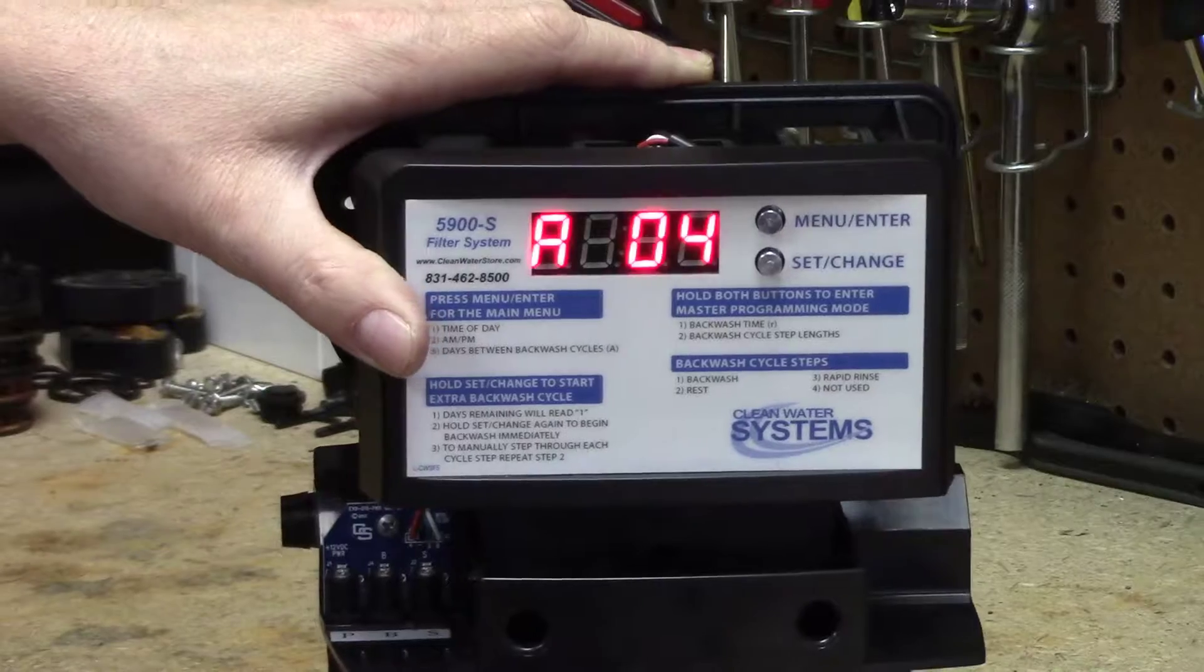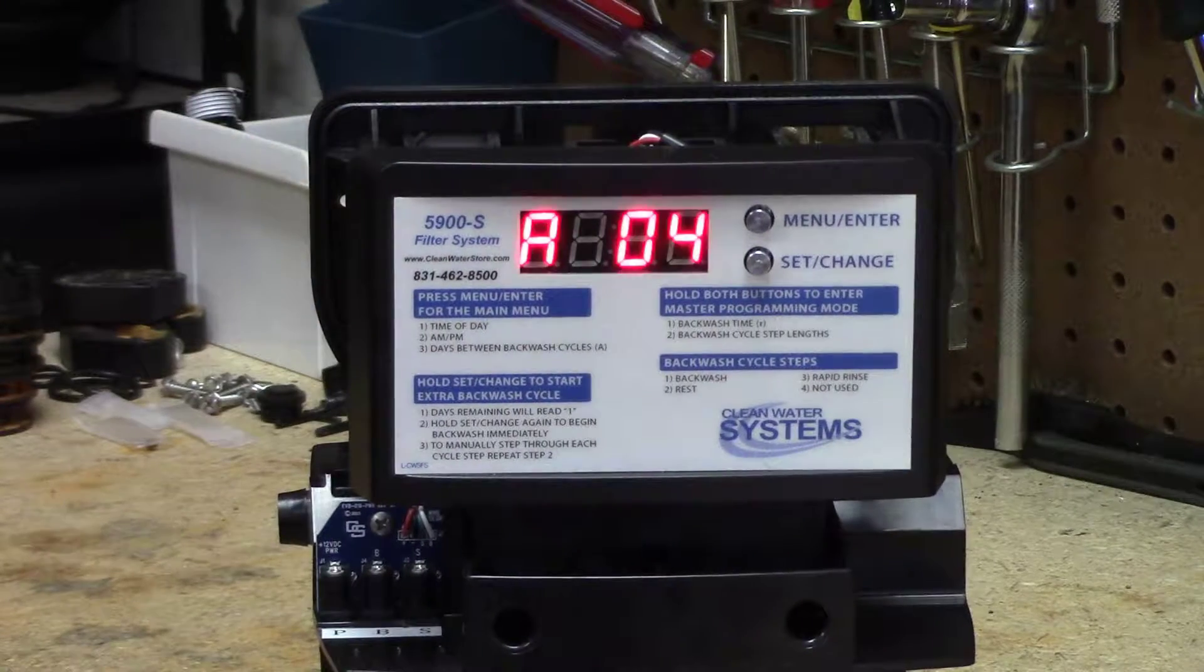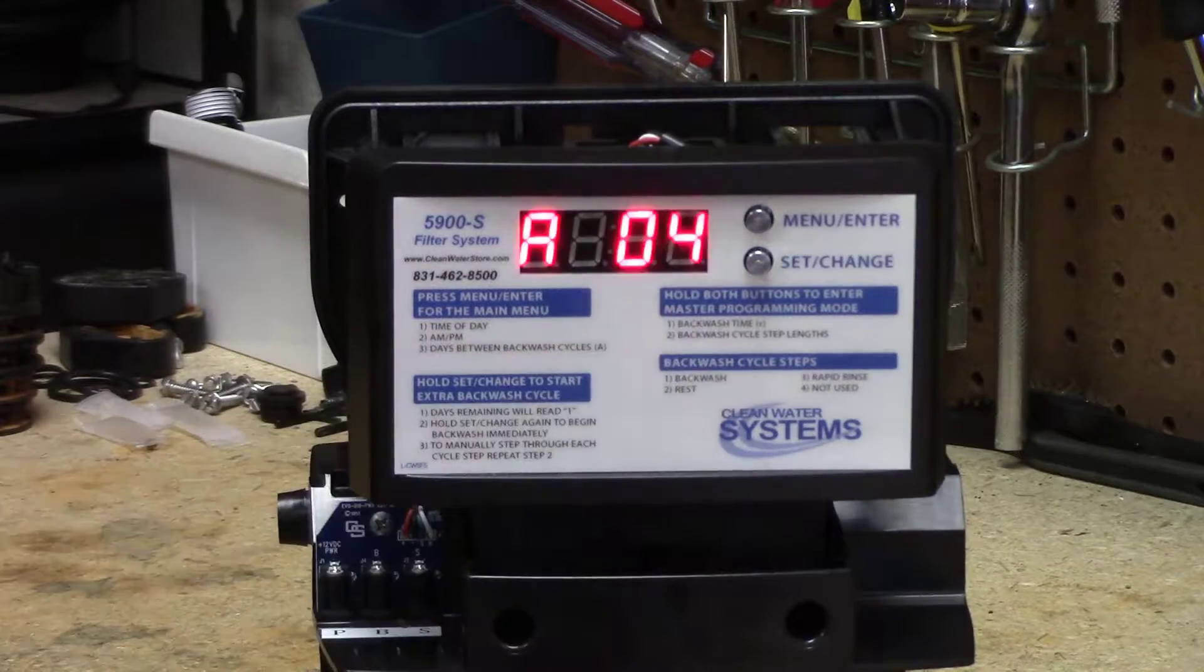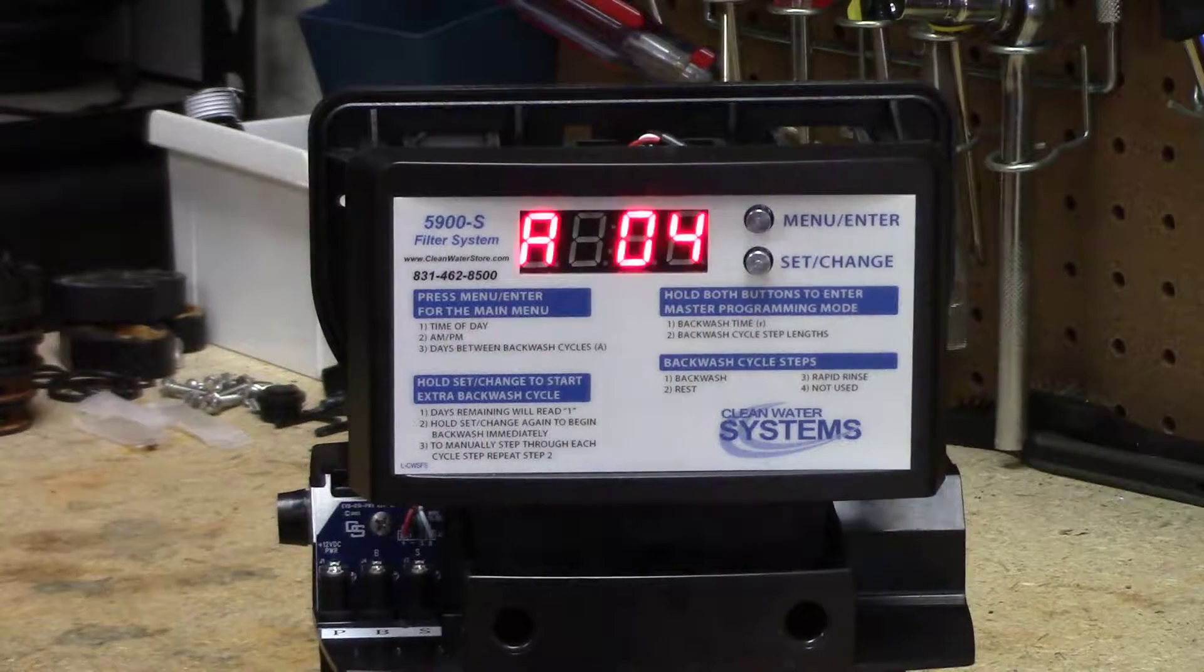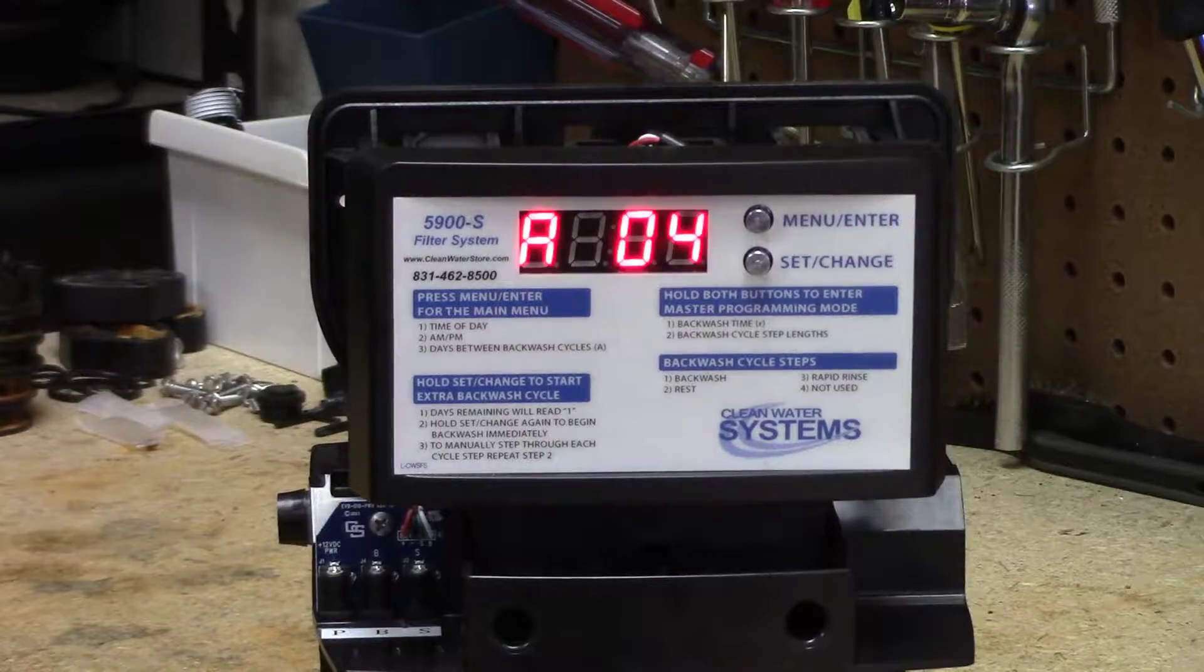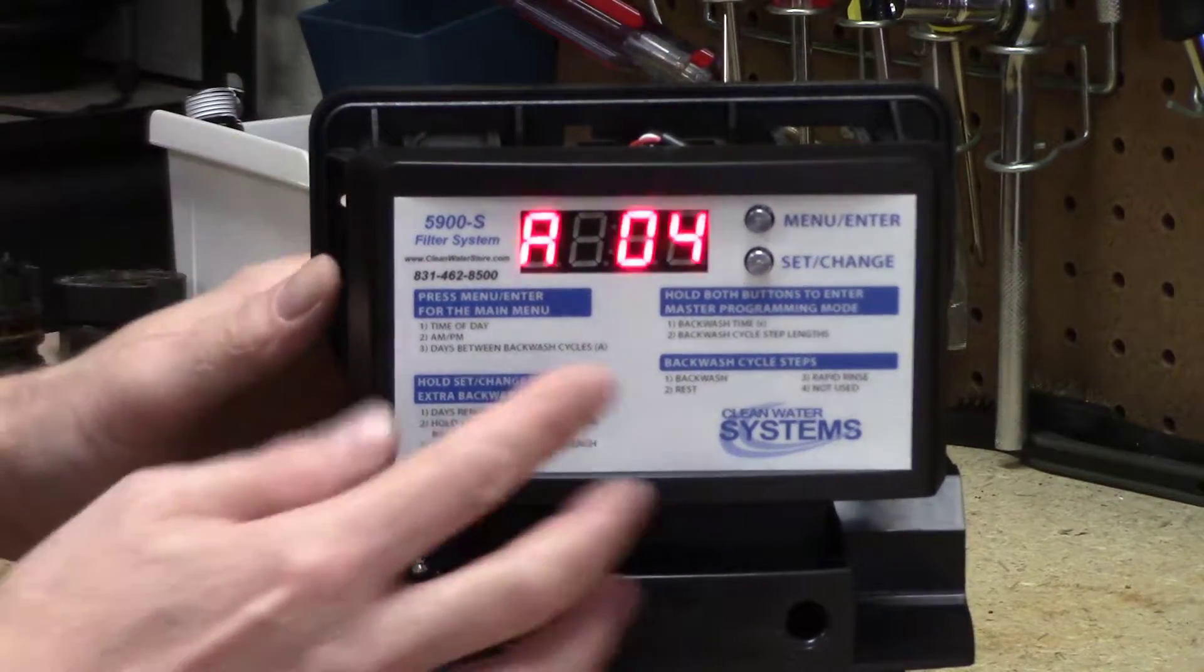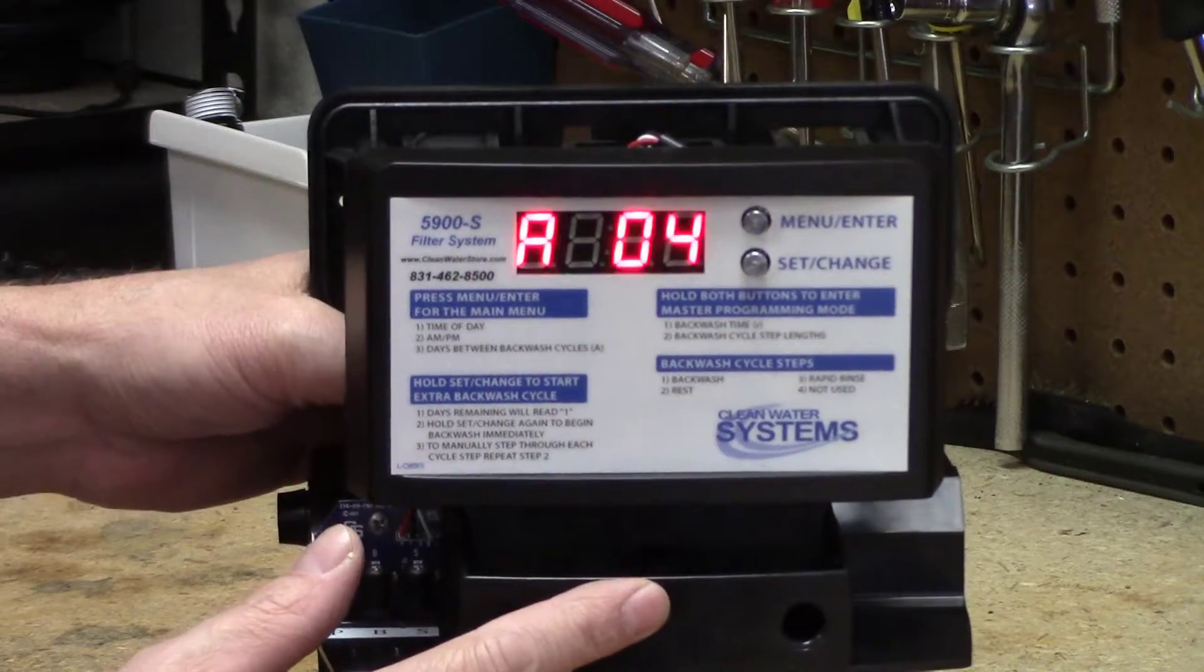And now it goes to the number of days between backwashes. So if you have a neutralizer or a carbon filter, you probably have this say 06. If you have an iron filter, it probably wants to be 04. In other words, carbon and calcite backwash about once a week, and an iron filter backwashes about twice a week.